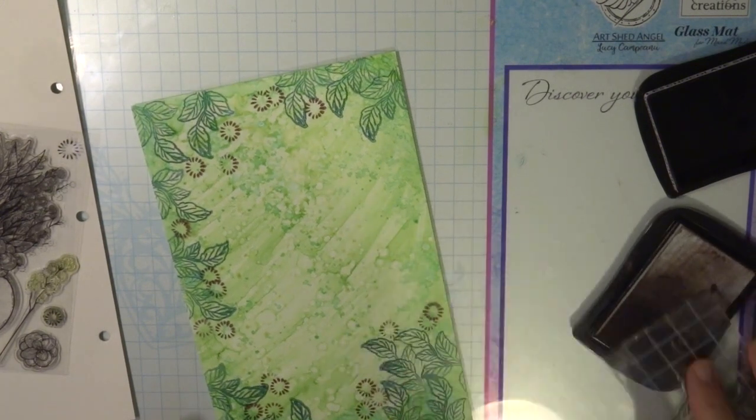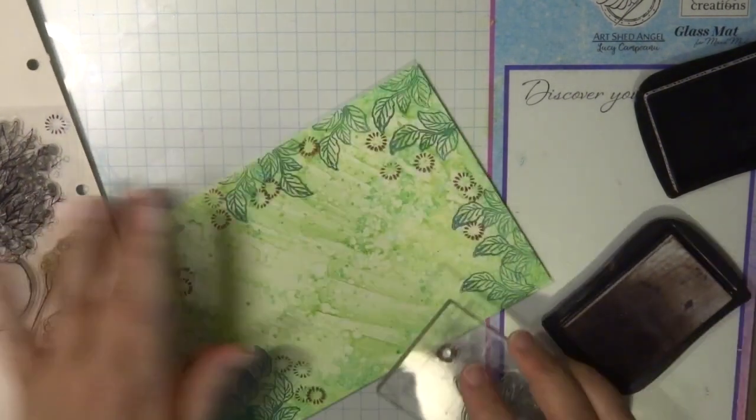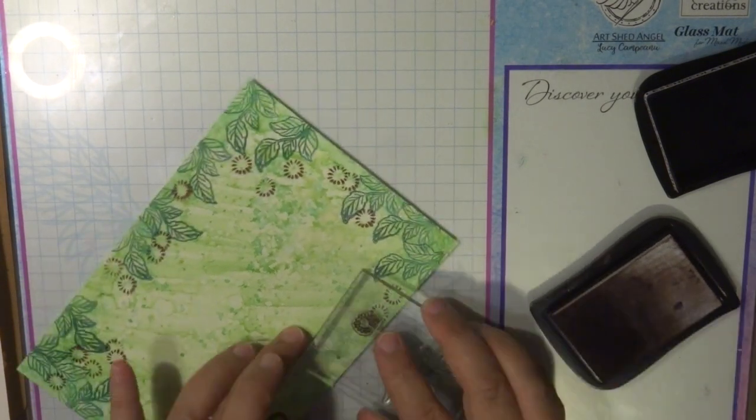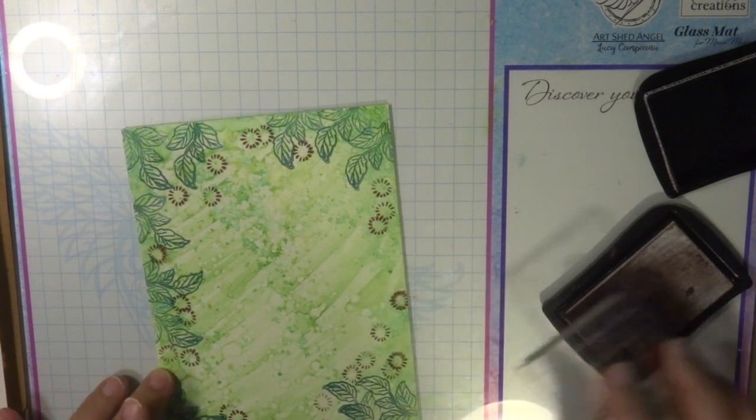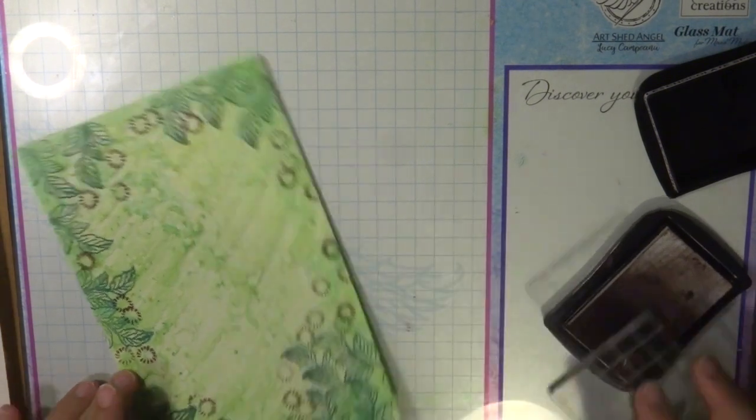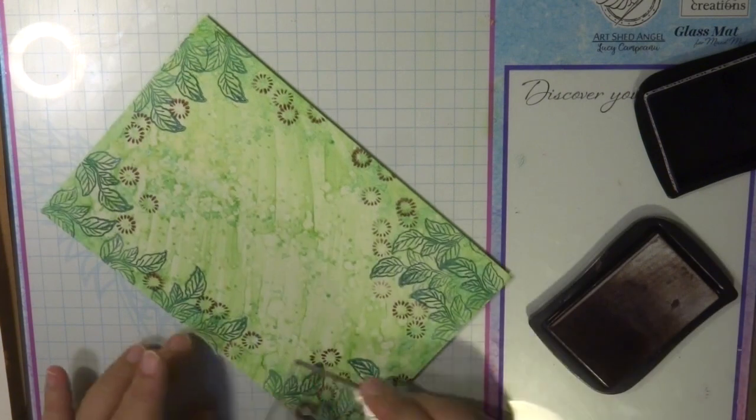I also did some more stamping around the edges. Now I'm going to add my colored images. Once I've stamped them on some blending card paper, I'm going to use alcohol inks to color in the flowers and the leaves and add them onto my project.